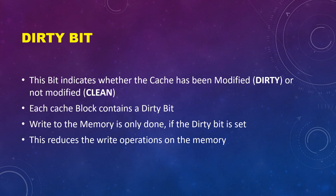Another term we are going to use is dirty bit. The dirty bit indicates whether the cache has been modified or not. Every cache block contains one dirty bit. Whenever the master writes data into the cache, it sets the dirty bit to indicate the modification. The data write from cache to memory is only done if the dirty bit is set, which reduces writes to the memory.